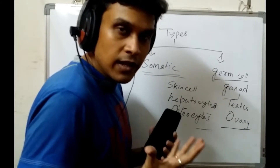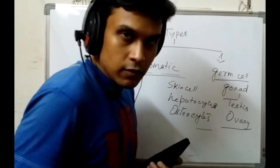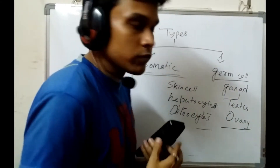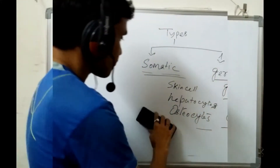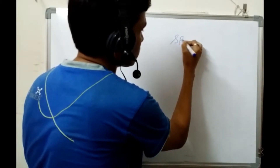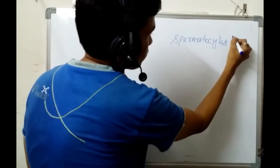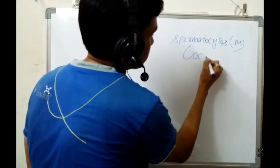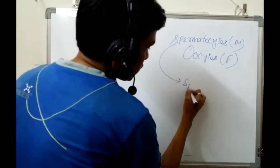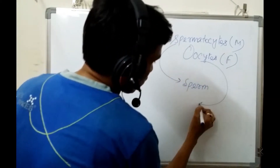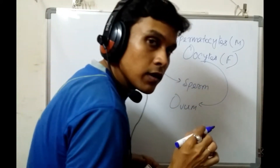The primordial germ cells are spermatocytes (in males, from which sperm is produced) and oocytes (in females, from which the egg or ovum is produced). These cells are very important for reproduction.